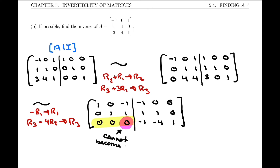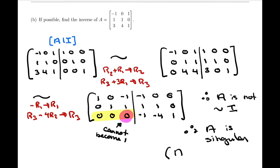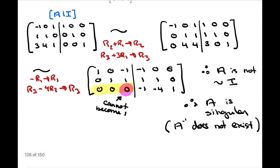The zero in the pivot position cannot become a 1. So if this cannot become a 1, the matrix on the left can never become the identity matrix. Looking back at the procedure: if you don't get I on the left, you stop and state that A is singular — not invertible. Therefore, A is not row equivalent to I, and therefore A is singular. Equivalently, A-inverse does not exist. These are two ways of saying the same thing.